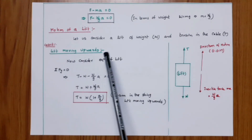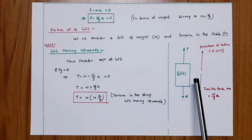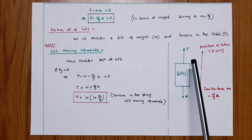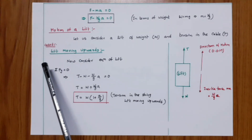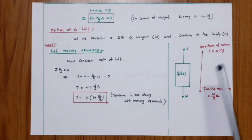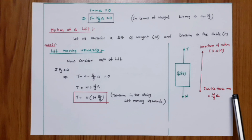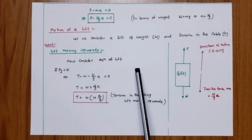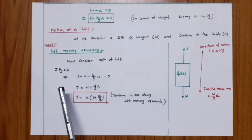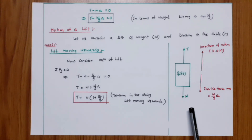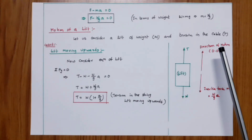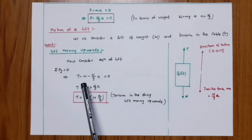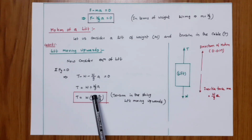Motion of a lift: consider a lift of weight W where the tension in the cable is T, always acting away from the lift — that is, upwards. The weight of the lift acts downwards. Case 1: lift moving upwards. The inertia force (W/g) times a acts downwards, opposite to the direction of motion. Considering equilibrium, sigma Fy equals zero: T minus W minus (W/g)a equals zero. Therefore, T equals W plus (W/g)a, giving tension T equals W times (1 plus a/g).